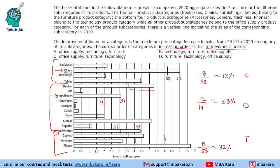So in increasing order: furniture comes first at ~13%, then technology at ~30s%, then office supply at ~63%. The answer is furniture, technology, and office supply. This was one of the easy sets, provided you know how to do approximations. The options were far apart, so even with some errors in approximation, you would have got all questions right in this set.